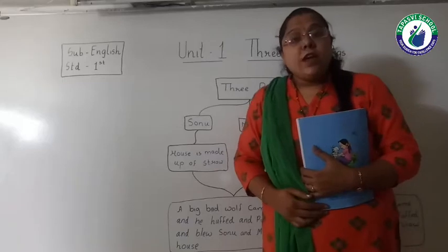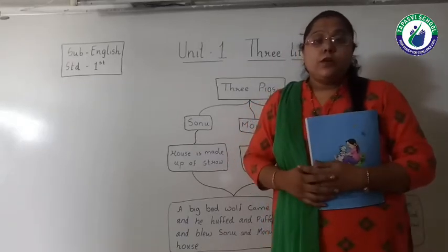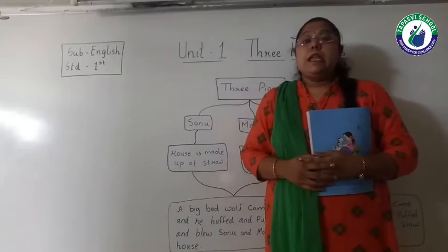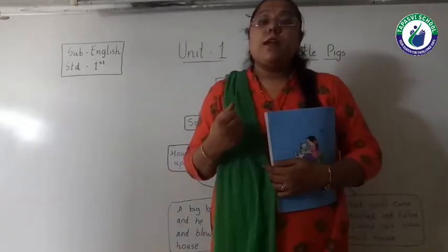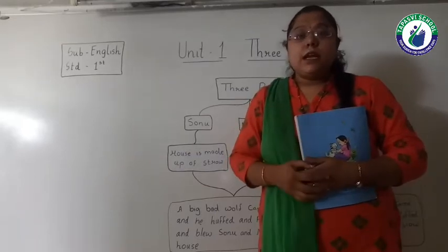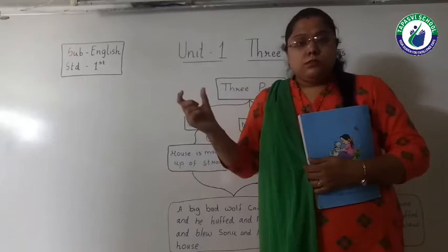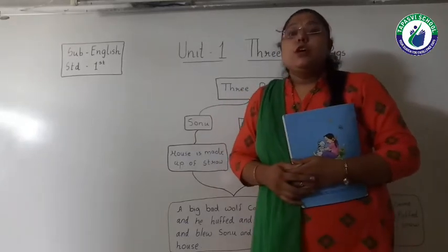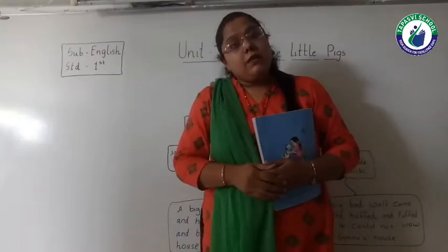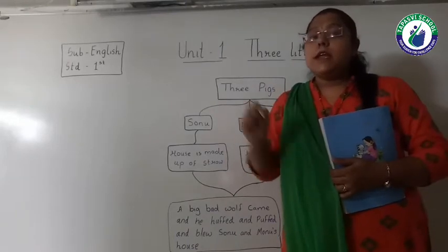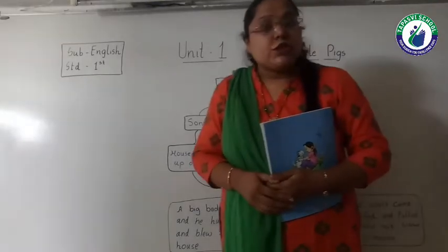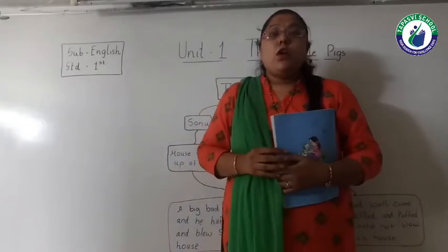Hello students, today we are going to start our lecture 4. In English we have units, not chapters. So in unit 1, two portions are there — one is poem and one is chapter. We have done the poem in the last two lectures, and we have started unit 1, story: Three Little Pigs. In the last lecture I explained this story through a mind map. Now today we are going to start the line-by-line explanation. Please listen carefully because after this video I will ask some questions.